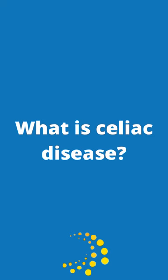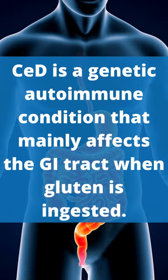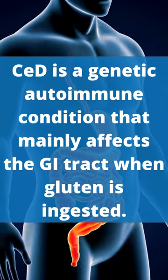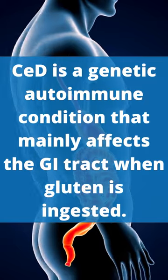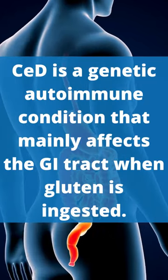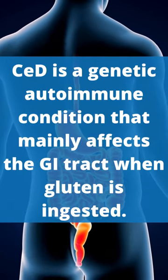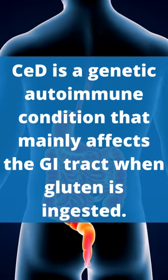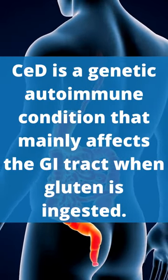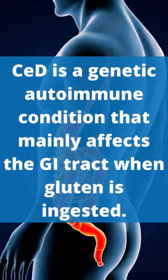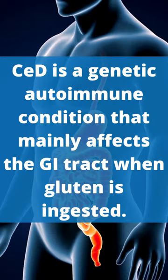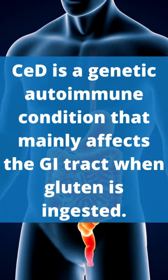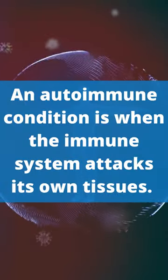What is celiac disease? Celiac disease is a genetic autoimmune condition that mainly affects the gastrointestinal tract when gluten is ingested. But celiac disease can definitely affect the entire body.